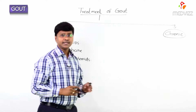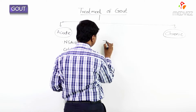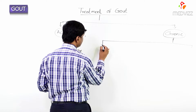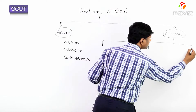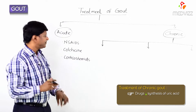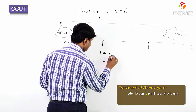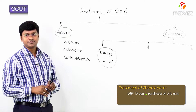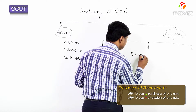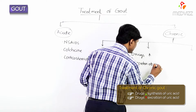In chronic gout, there are three groups of drugs. The first group is drugs decreasing the synthesis of uric acid. The second group is drugs which will increase the excretion of the uric acid.